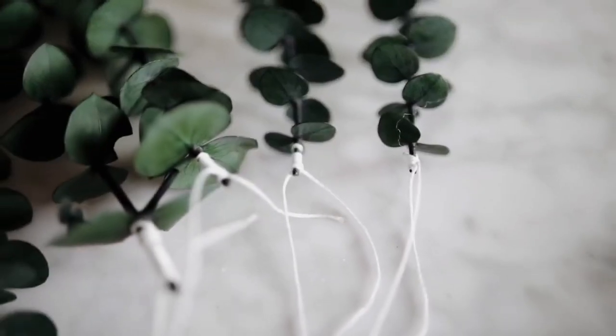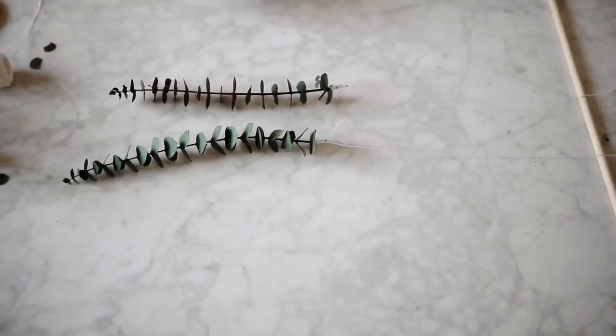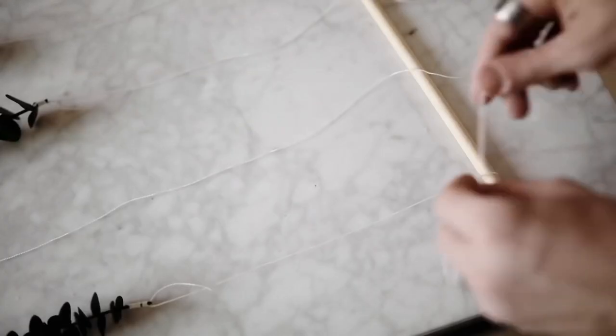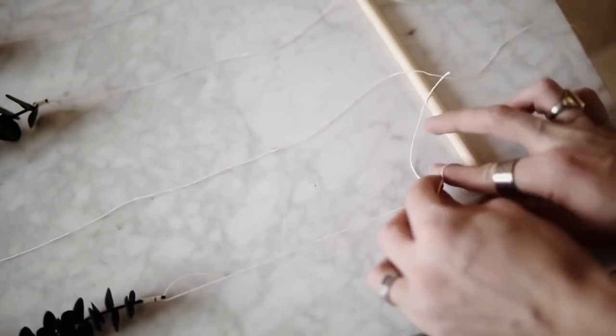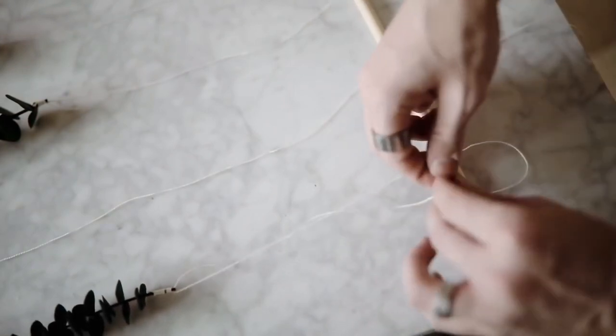Once you have all of your eucalyptus strung up and ready to go, we can start applying this to our wooden dowel. When it came to constructing the final piece, I made sure that all my eucalyptus pieces were hanging at different lengths so it just added a little bit more visual interest and not everything was at the same exact level.